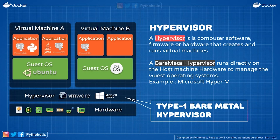A bare-metal hypervisor runs directly on the host machine's hardware to manage the guest operating systems — the OS installed as part of the VM. So what kind of hypervisor was CP? It was a bare-metal hypervisor, which is why VM370 was a hardware-assisted virtual machine operating system. But I still have questions: if the hypervisor sits between the VM and the hardware, what exactly does it do — how does it assign CPU or memory?